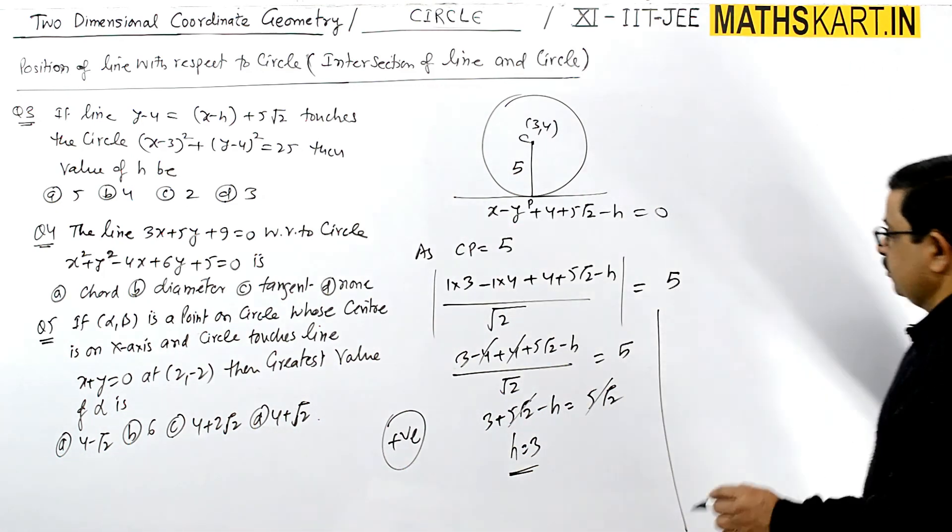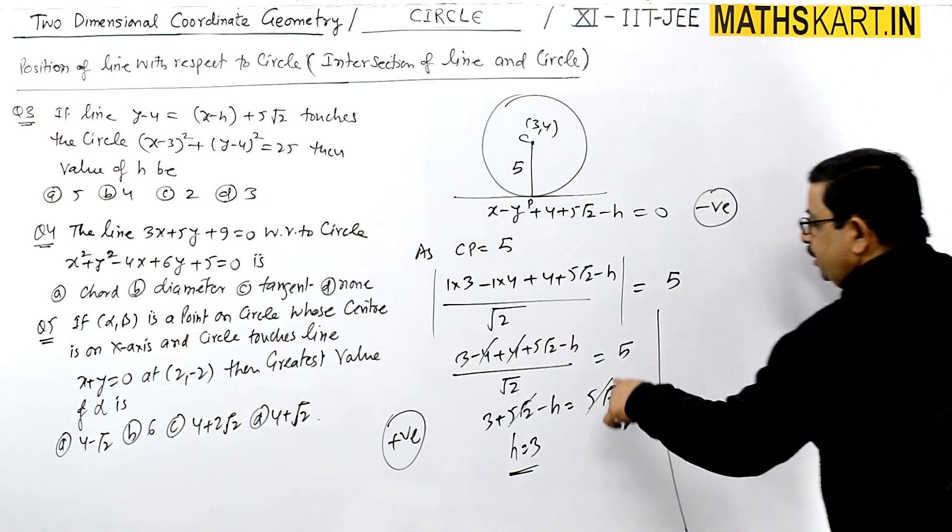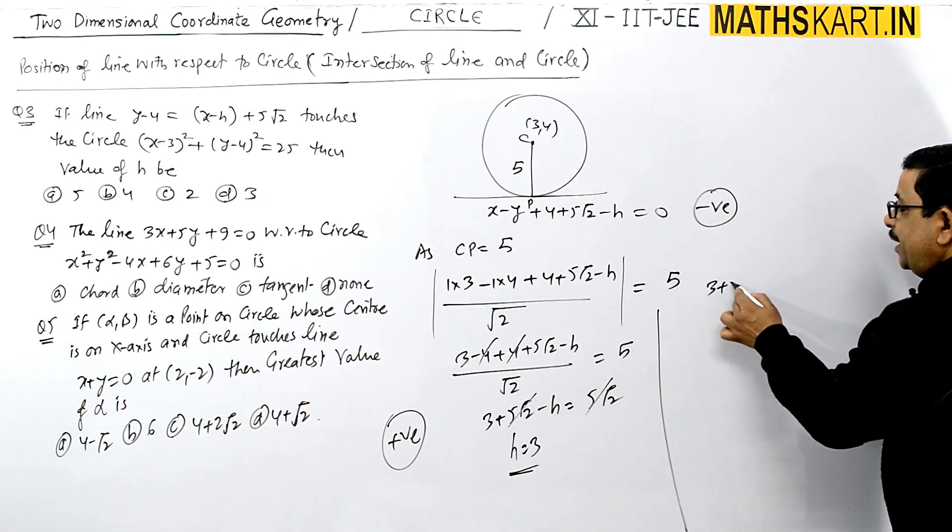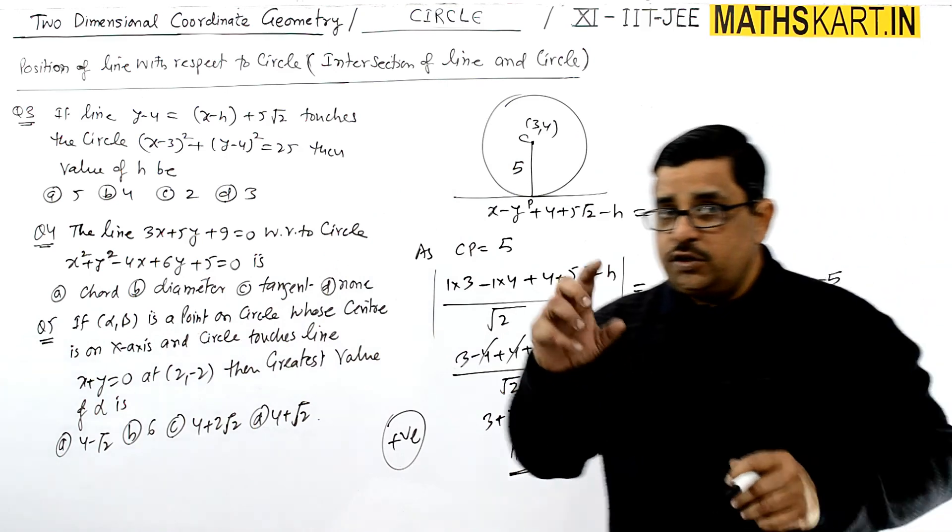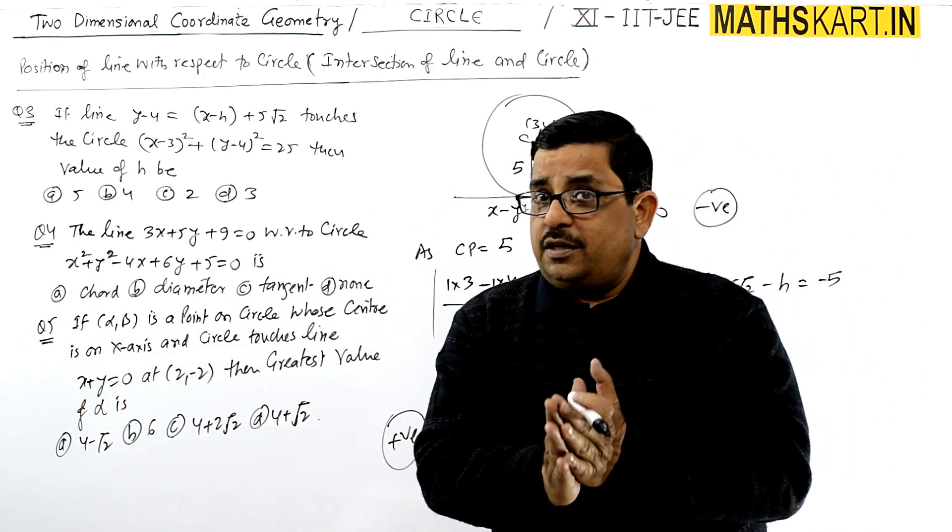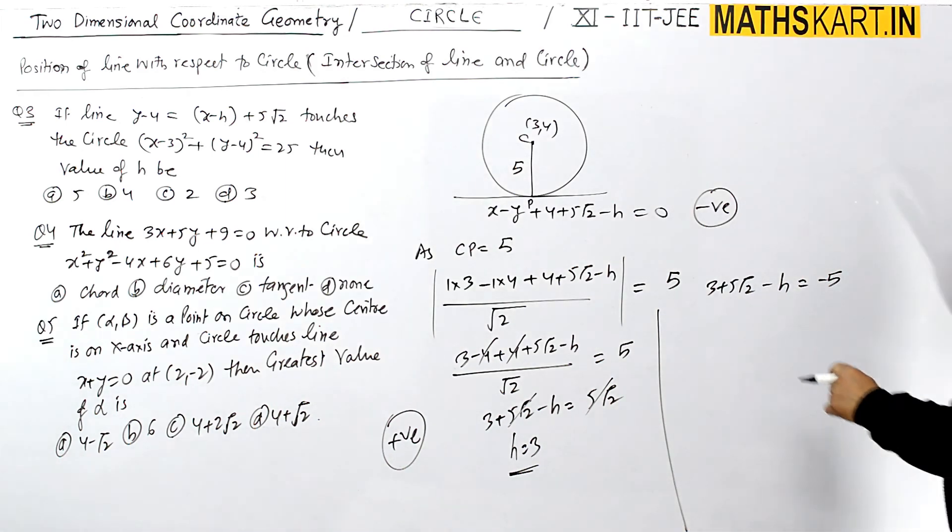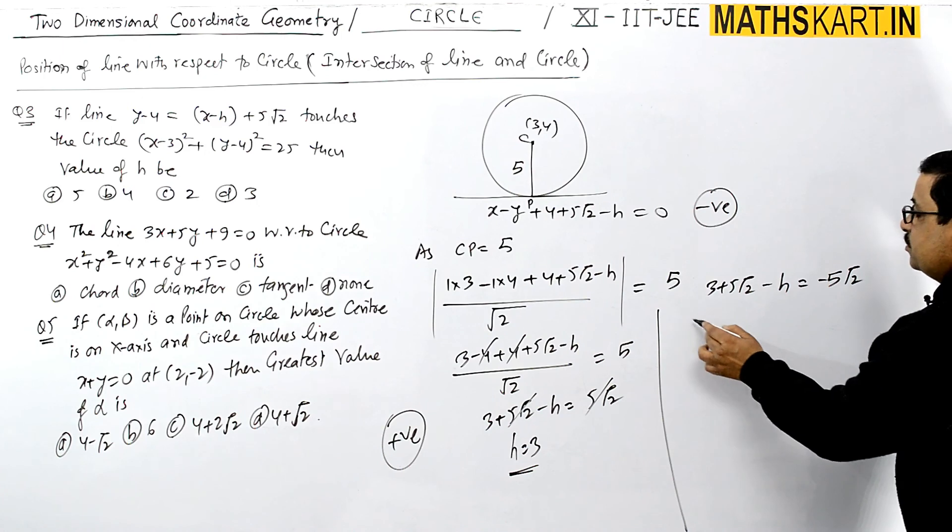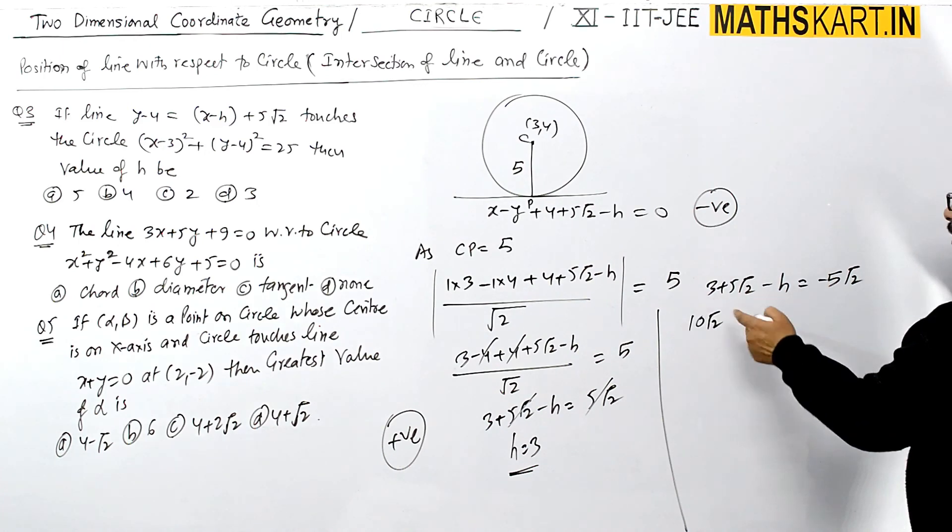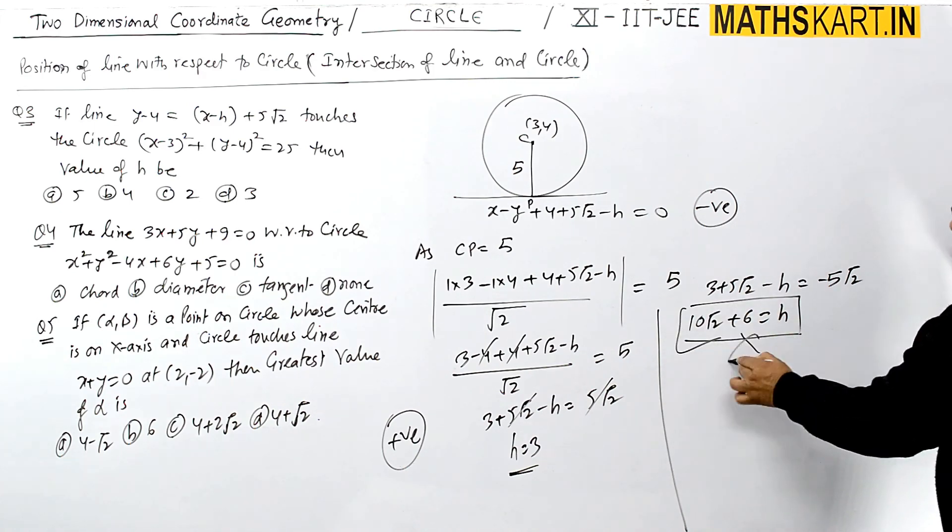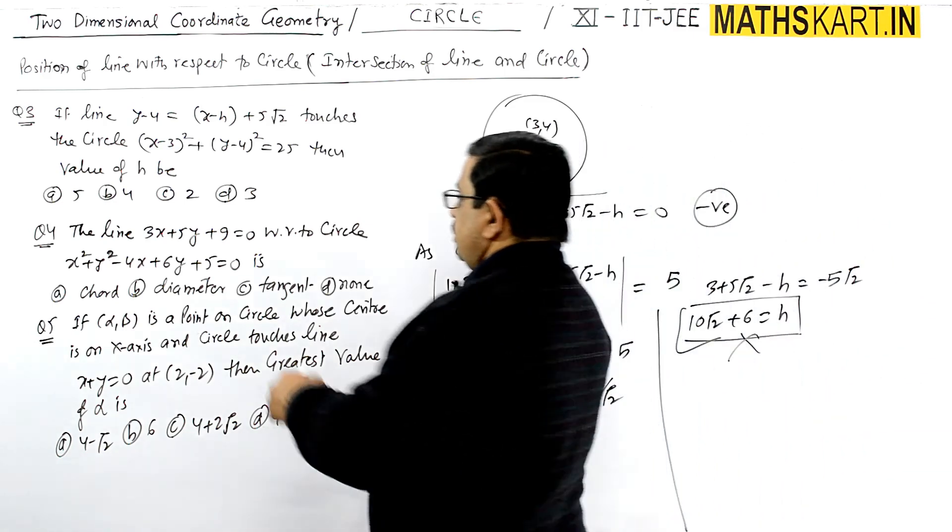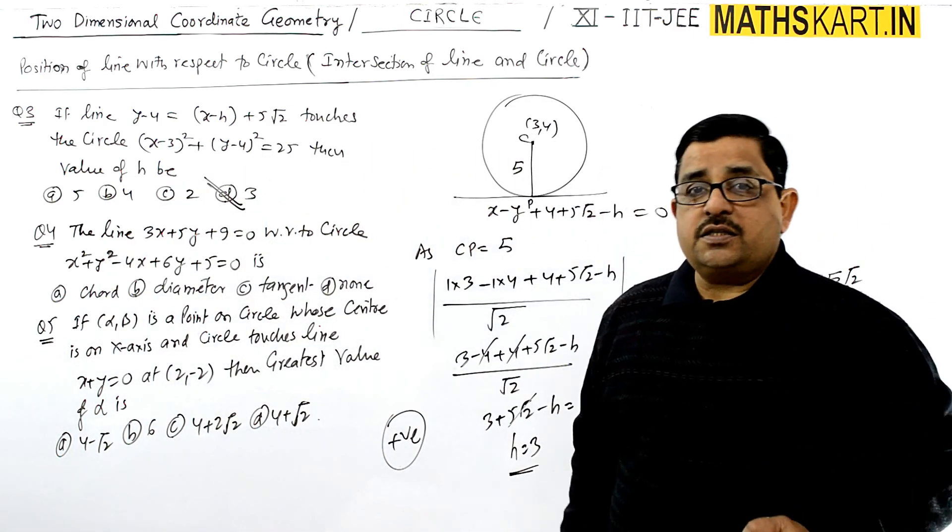Now take the negative value of this. This value should be negative. So 3 + 5√2 - h equals -5√2. Because modulus is there, you have to take plus minus. So the second value is negative. And then you see what you get. This is -5√2. So at this time, this value becomes 10√2: 5√2 + 5√2 = 10√2 + 3 equals h. And this value is not available in the options. So option D is perfect here.